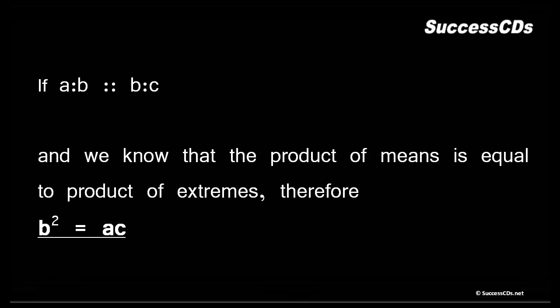Therefore, if a:b is proportional to b:c, and we know that the product of means is equal to product of extremes, therefore b² = ac. Please remember, this is a very important formula for continued proportion. Product of means becomes b-square, and product of extremes is ac, and it will always be equal.